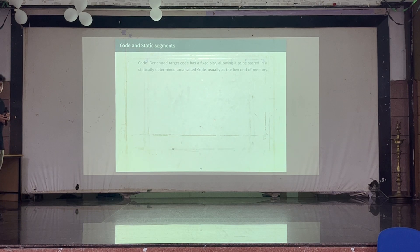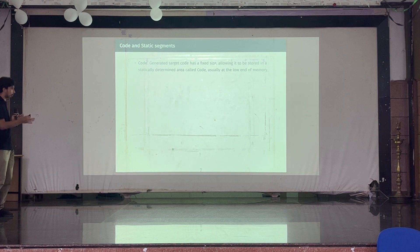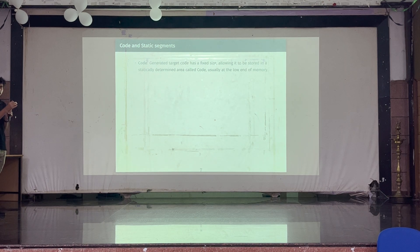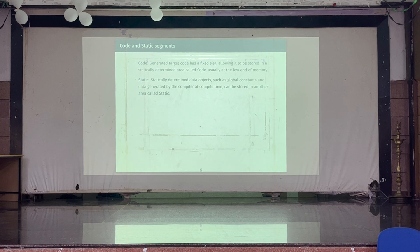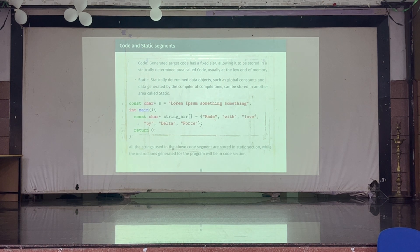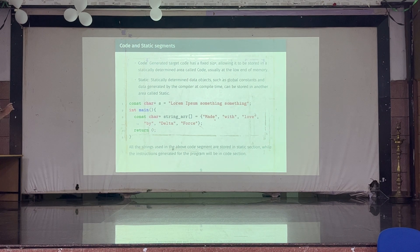First, the code segment. You know how a program is compiled — you have a program and a compiler. The compiler compiles that program into instructions. Since the program source code is fixed in size, the generated assembly or instructions will also be of fixed size, and all of those instructions go into the code section. Next is the static section — variables whose size is known at compile time go into the static section. Code goes into the code section. That's all you need to know about code and static sections for this topic.